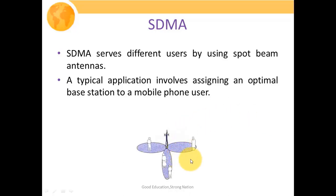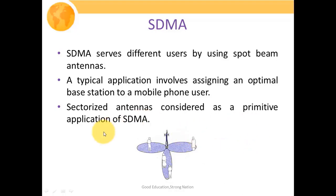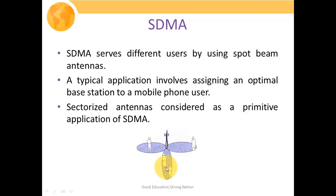This figure shows an example of a sector antenna, which is considered a primitive application of SDMA. A specific sector antenna is assigned to individual users so they can communicate via the base station. Although they exploit the same time and frequency bands, their signals do not overlap since they are spatially separated, thus limiting interference.